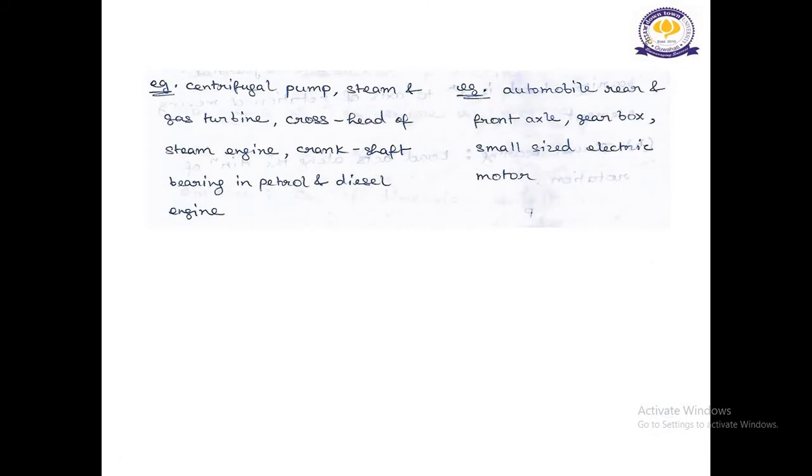Let's see some examples of Sliding Contact Bearing, like Centrifugal Pump, Steam and Gas Turbine, Crosshead of Steam Turbine, Crankshaft, Bearing in Petrol and Diesel Engine. And let's see some examples of Rolling Contact Bearing, as automobile rear and front axle, gearbox, small size electric motor.